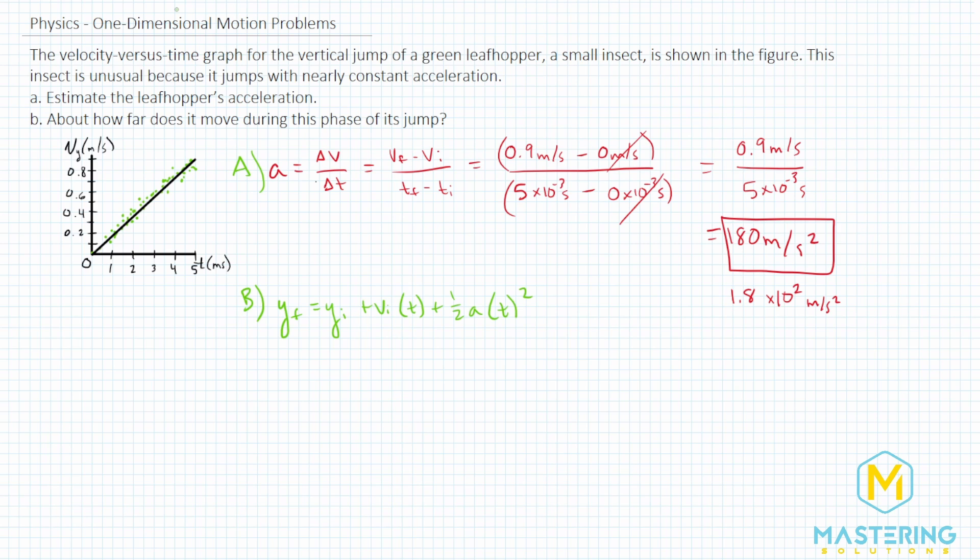We know that the y initial is zero so that we can cancel. The initial velocity is also zero. So this whole unit will cancel. So we're left with y final is equal to one half times the acceleration times the time squared.